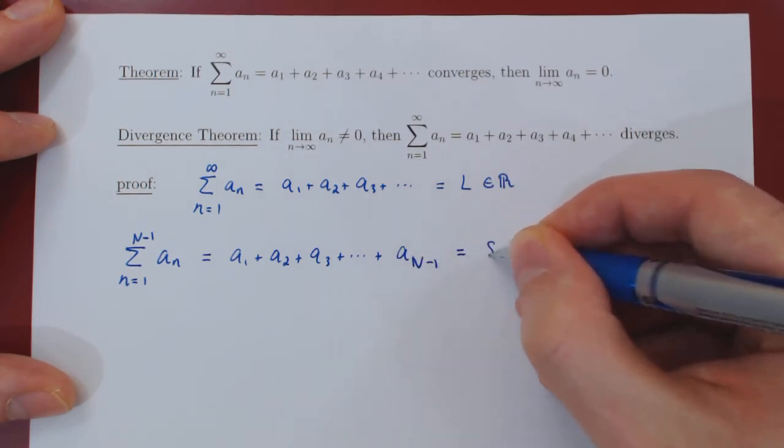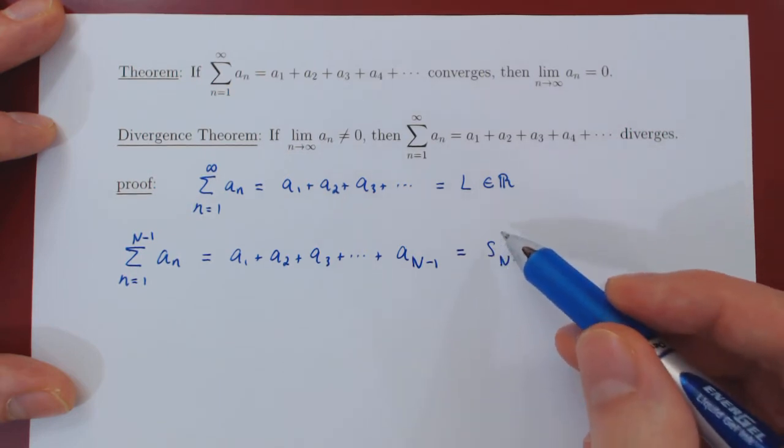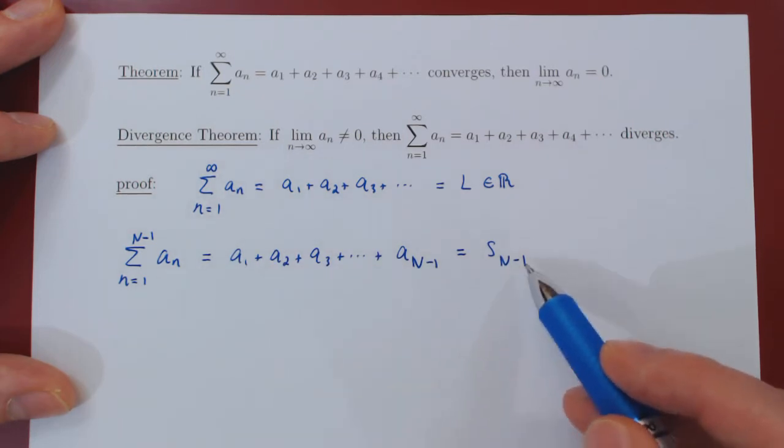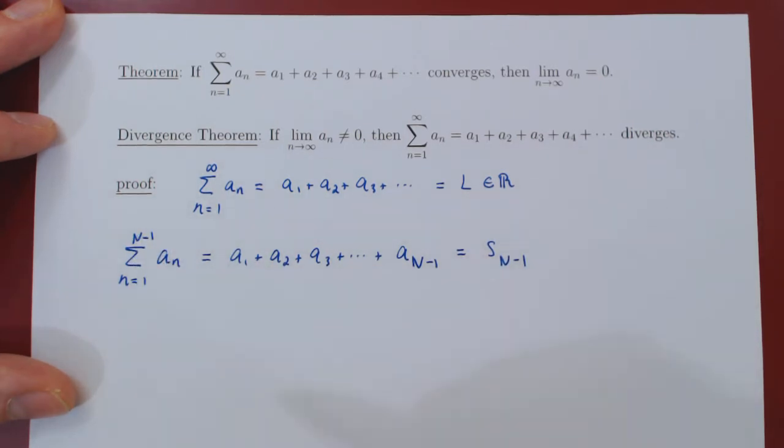I will call this S sub uppercase N minus 1, the partial sum of the series up to the N minus 1 term.